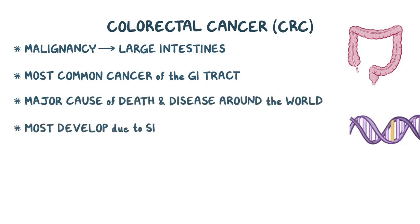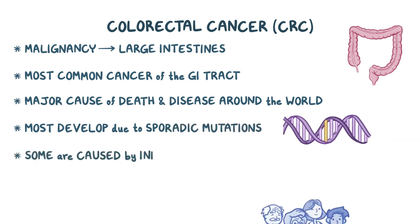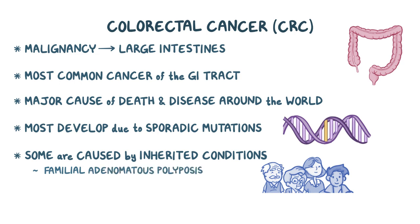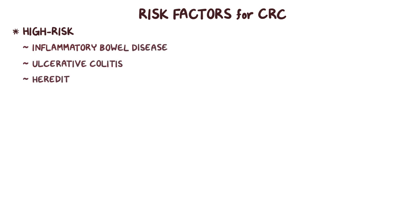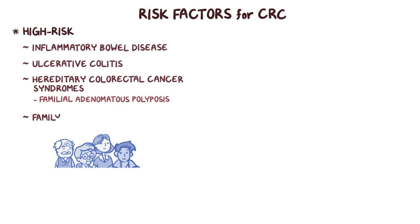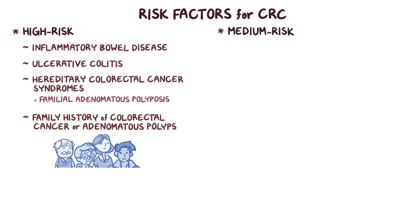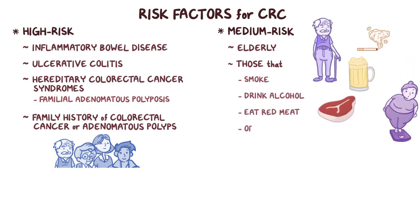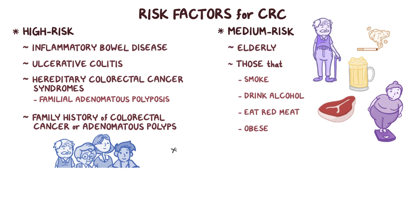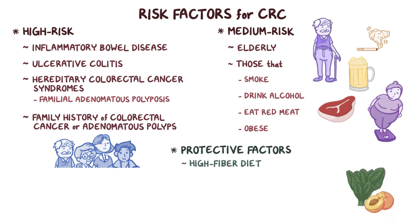Most colorectal tumors develop due to sporadic mutations, but some are caused by inherited conditions like familial adenomatous polyposis and Lynch syndrome. Individuals at high risk for CRC include those with inflammatory bowel disease, especially ulcerative colitis, hereditary colorectal cancer syndromes such as familial adenomatous polyposis, and those with a family history of colorectal cancer or adenomatous polyps. Individuals at medium risk include the elderly and those that smoke, drink alcohol, eat red meat, and are obese. Well-established protective factors include a high-fiber diet full of fruits and vegetables.